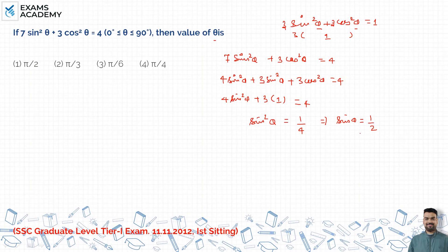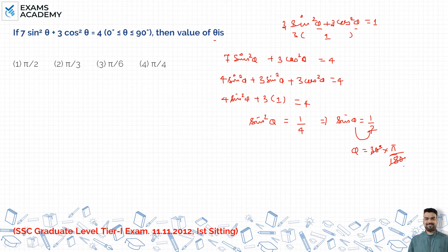Root ले लिया मैंने दोनों का। sin θ = 1/2 होता है तो theta = 30 degree होता है। तो आपको theta की value find करनी थी: 30 degree। अब यहाँ पर option pi में है, तो आप pi upon 180 से multiply करेंगे — 30 से 180 कितने time गया? 6 time। तो आप इसे कह सकते हैं pi by 6। Option number 3।